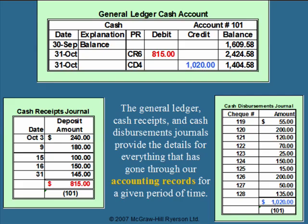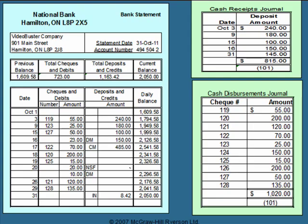Here we see a snapshot of the general ledger cash account. In most textbook questions, the checks and deposits are shown as totals — debits or deposits as one total, and checks as one total. The details are shown in separate tables called the cash receipts journal and the cash disbursements journal. When looking for deposit details, we look in the cash receipts journal; for check details, we look in the cash disbursements journal.